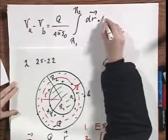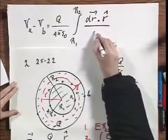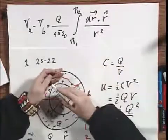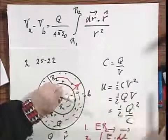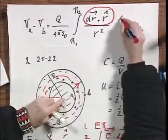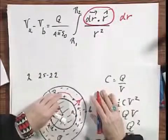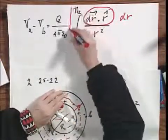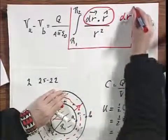Dr dot R roof is a dot product there, divided by R squared. And as we discussed last time, the dot product between two vectors is a scalar. This scalar is nothing but dr, and this integral then becomes a very easy one.